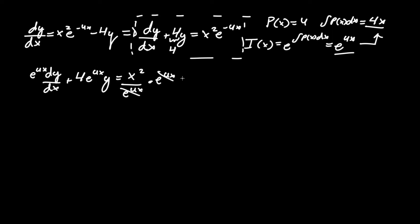These will actually end up canceling. So, this becomes e to the 4x dy/dx, plus 4 e to the 4x y, and that equals simply x squared.